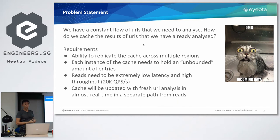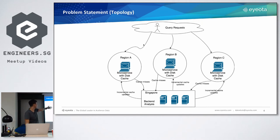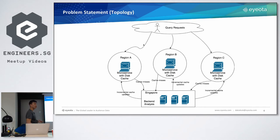This is basically the topology of what we envisioned. User requests come into different instances across different regions. We have a microservice deployed that will be using this cache. Every miss from the cache flows into a Singapore data center to be analyzed. After the analysis has been done, it's pushed back to the cache in the various regions.